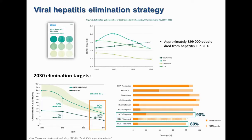Mortality by viral hepatitis, especially hepatitis C, has been increasing and even surpasses that of other relevant infectious diseases in the world. With an effective treatment available, this cannot be allowed to continue. In 2016, the WHO launched the first global strategy on viral hepatitis for elimination as a public health threat by 2030 — achieving a 90% reduction in new cases and a 65% reduction in mortality. This requires a massive scale-up in diagnosis and treatment from 2015 baseline to 2030 targets of 90% and 80% respectively.